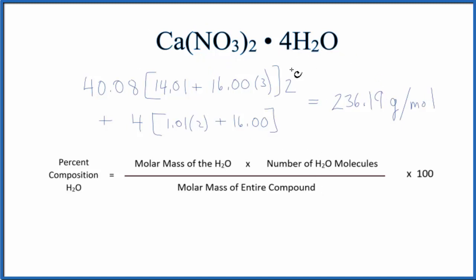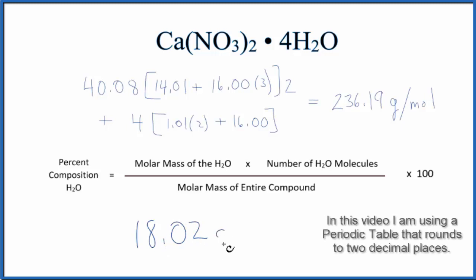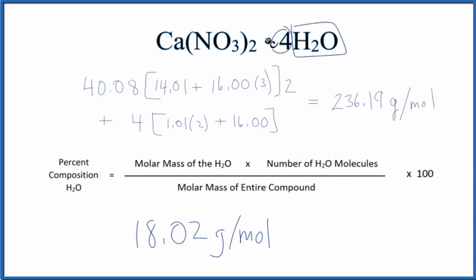So the first thing we want to do is use this equation here. We can write the molar mass of the water. The molar mass for water is 18.02 grams per mole and we're going to multiply that by the number of water molecules. We have four separate water molecules here around the calcium nitrate, so four.